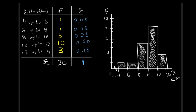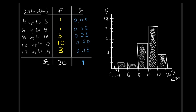I'd recommend practicing building histograms by hand, using the rules and figuring out what works visually. There is some judgment involved in choosing suitable numbers for the rule of 2^K and bin width. If you have any questions, feel free to email, post to the D2L FAQ, or come to office hours. Next, we'll look at how to draw an ogive, or cumulative frequency diagram.